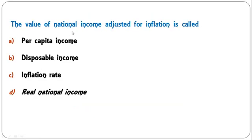Value added is equal to: value of output minus opportunity cost, intermediate consumption, opening stock, or closing stock? The correct answer is value of output minus intermediate consumption equals value added. So B is the correct answer.